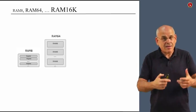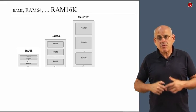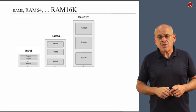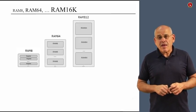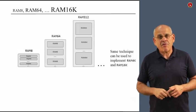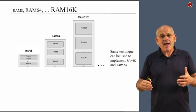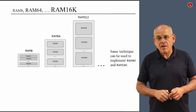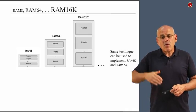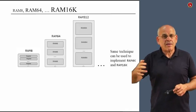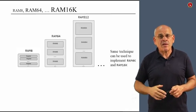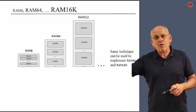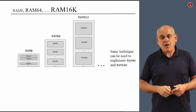We can take eight such RAM64s, put them together to yield the next chip in our hierarchy, which is RAM512. And we can do two more steps of a very similar nature and end up with the most elaborate RAM chip, the one that we have called RAM16K. So we basically repeat the same recursive ascent, if you will. And by using this strategy, we can build more and more elaborate RAM chips.